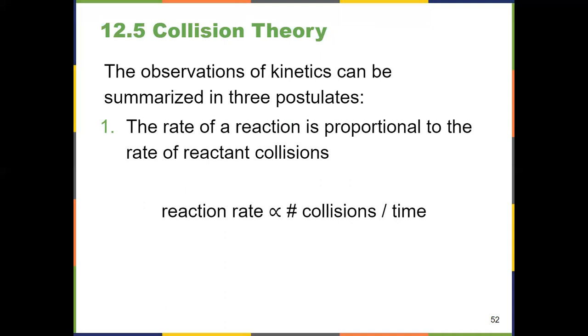Number one is that the rate of a reaction is proportional to the rate of the reactant collisions. And that's the key thing to underline right there. Reactant collisions has nothing to do with the products. We're thinking about reactants and specifically how they collide together. That's what collision theory is all about. So to rewrite that a different way, reaction rate is proportional to the number of collisions per unit time.